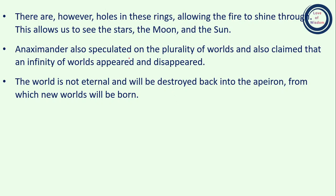This theory allowed for the concept that celestial bodies could pass under or around the earth. There are holes in these rings of fire, allowing the fire to shine through. This allows us to see the stars, moon, and the sun.